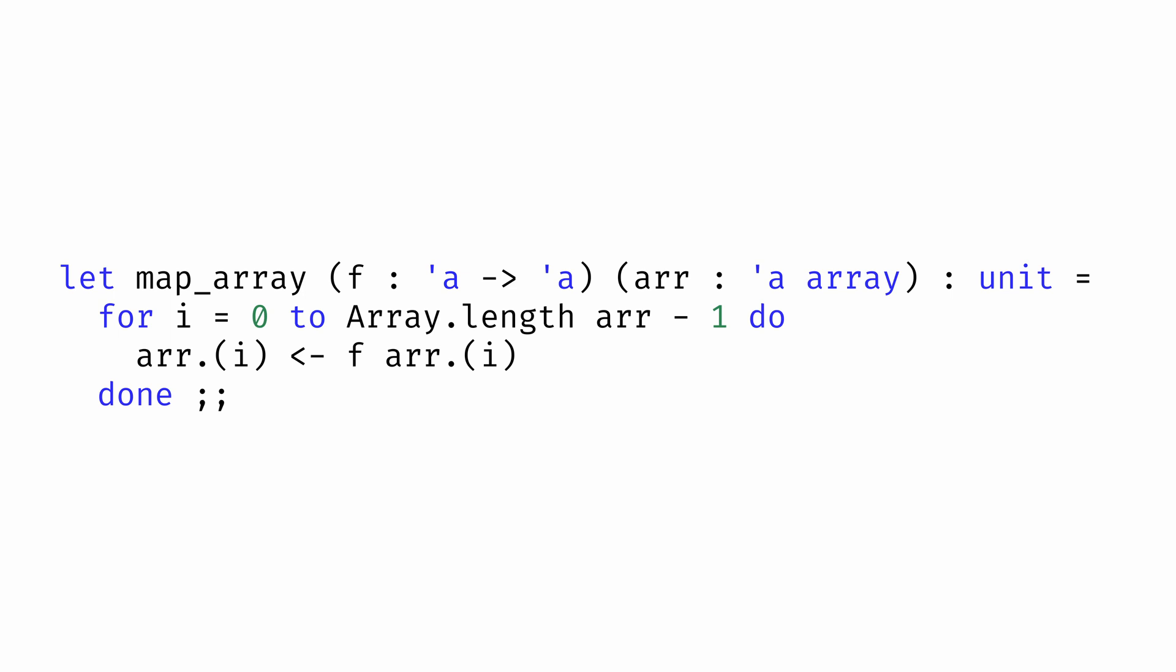Compare that to an iterative version of map that might work on a mutable data type like an array. Here, we map over an array by using a for loop that counts from zero up to the maximum valid index in the array and updates the element at that index in the array to be the result of applying some function to whatever is at that index.